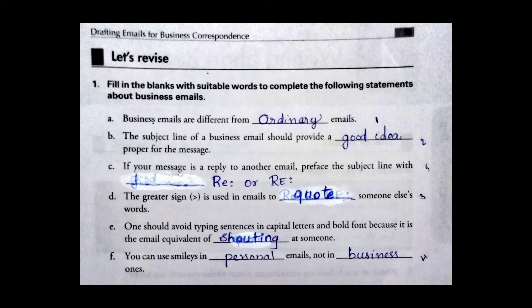E) One should avoid typing sentences in capital letters and bold forms because it is the email equivalent of ___ at someone — bold and capital letters suggest anger to the reader. F) You can use smileys in ___ emails, not in ___ emails. Personal emails allow smileys, but business emails do not. Thank you for completing this lesson on business email writing.